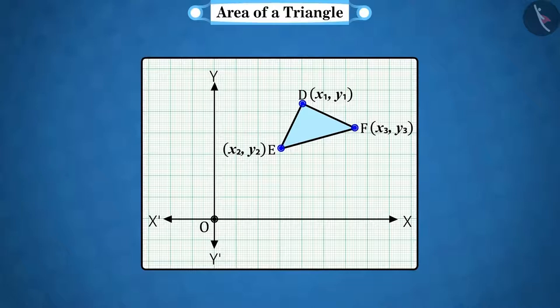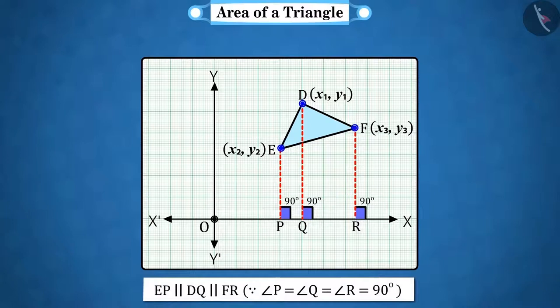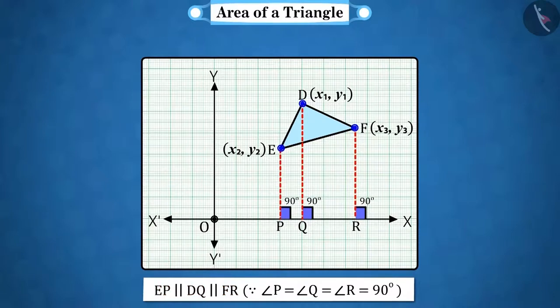From the points D, E and F, if perpendiculars DQ, EP and FR are drawn respectively to the x-axis, then it looks something like this. If we look at this figure carefully, then we find that the perpendicular EP is parallel to DQ and DQ is parallel to FR. That is, all the three perpendiculars are parallel to each other.